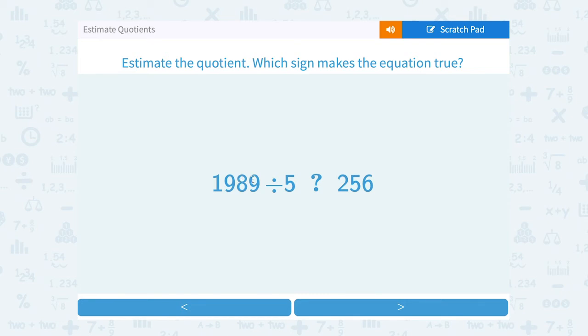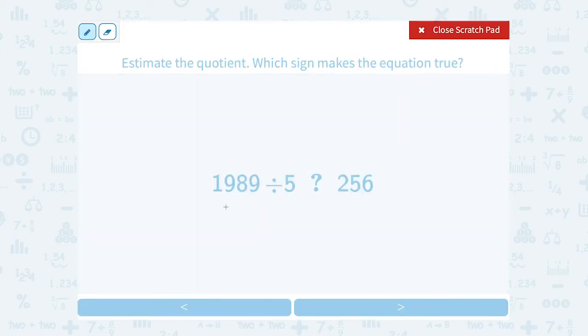1,989 divided by 5, I want to compare that to 256. Well, if I round this number, 1,989 is really close to 2,000. And this is going to be much easier math for me if I say 2,000 divided by 5.